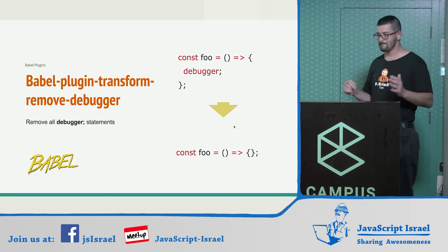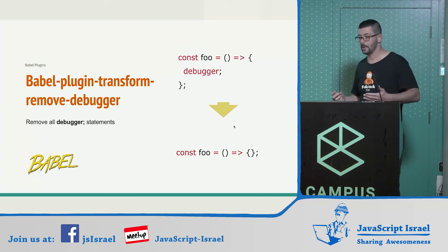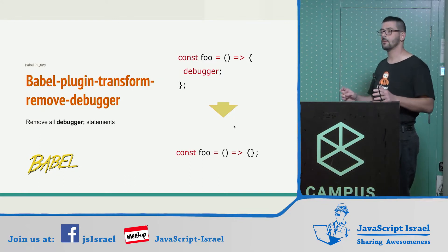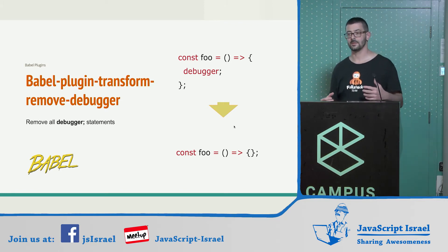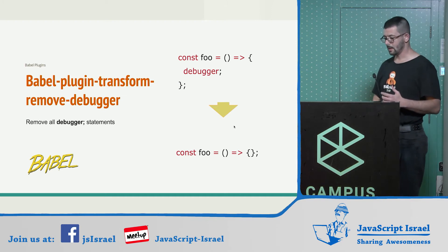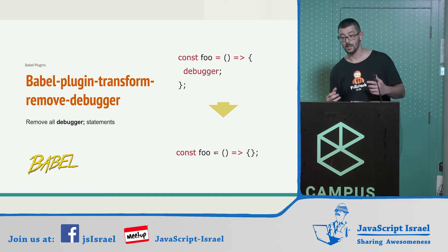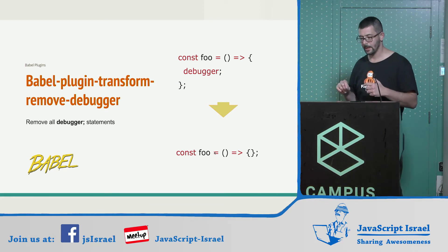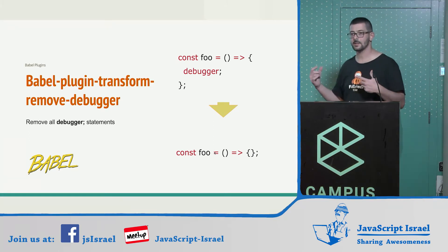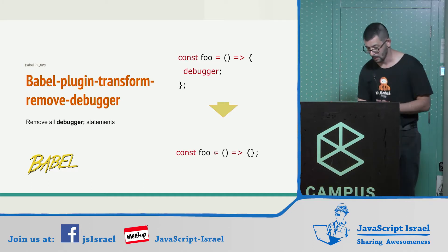Let us now see how it works hands-on. I will build from scratch a new Babel plugin that will do a very useful task: it will remove debugger statements from our code. It will accept code in this form and return the same code without the debugger statement. Before writing the actual code, let us see the abstract syntax tree of the debugger statement and how we need to modify it.